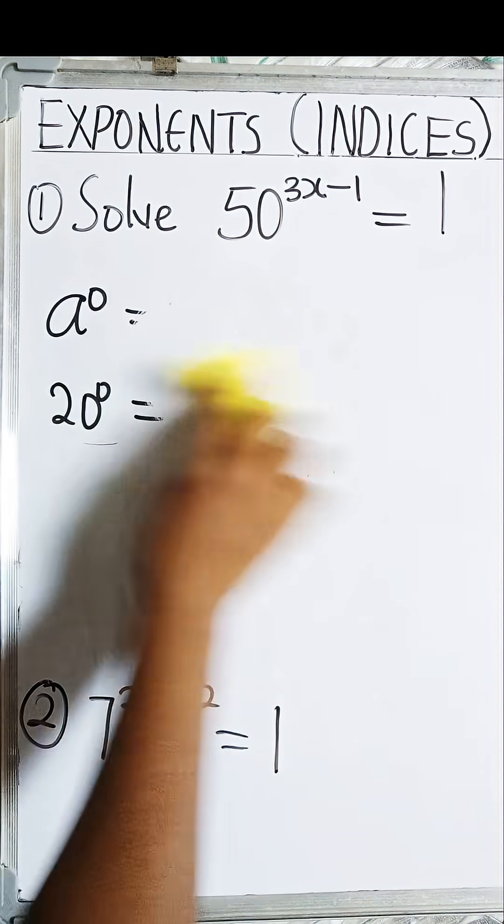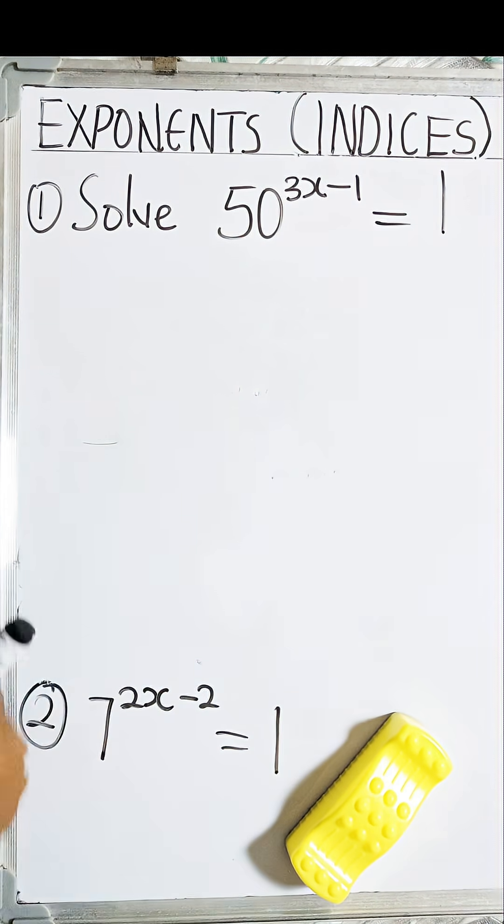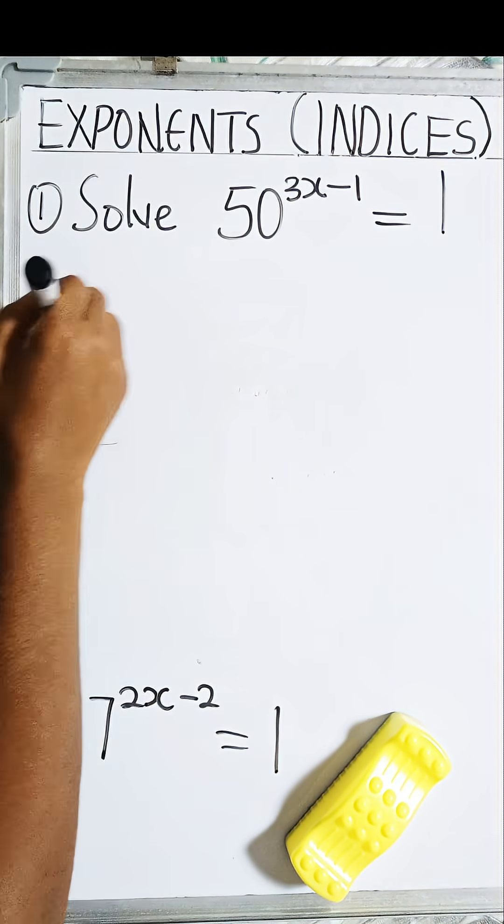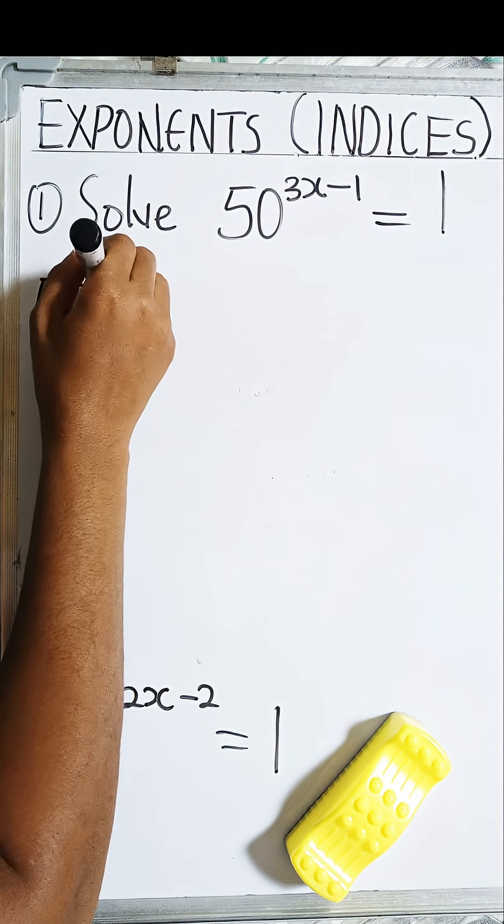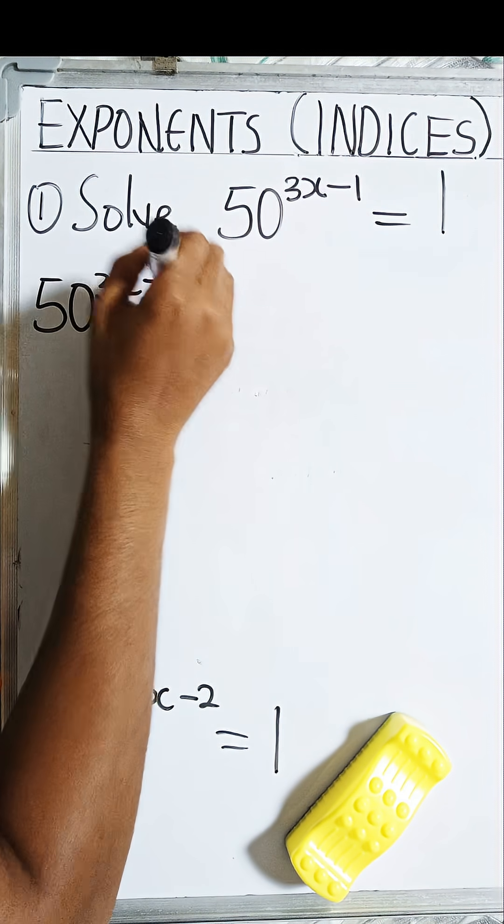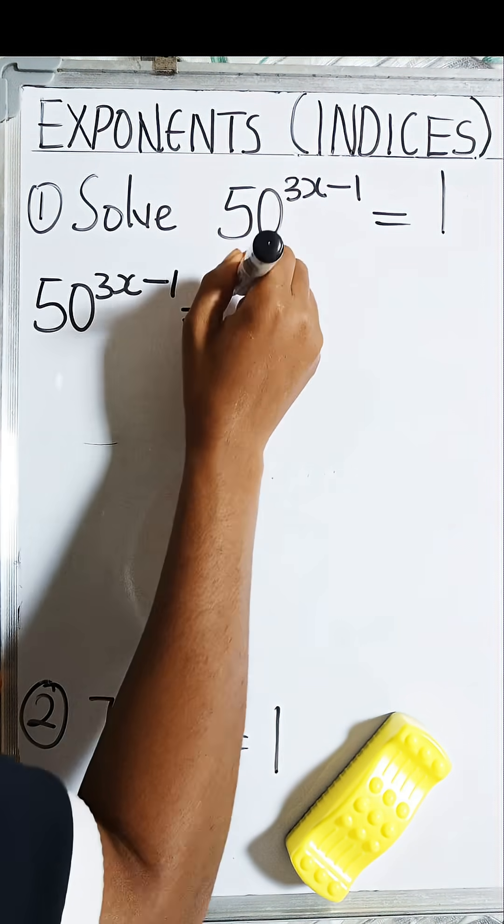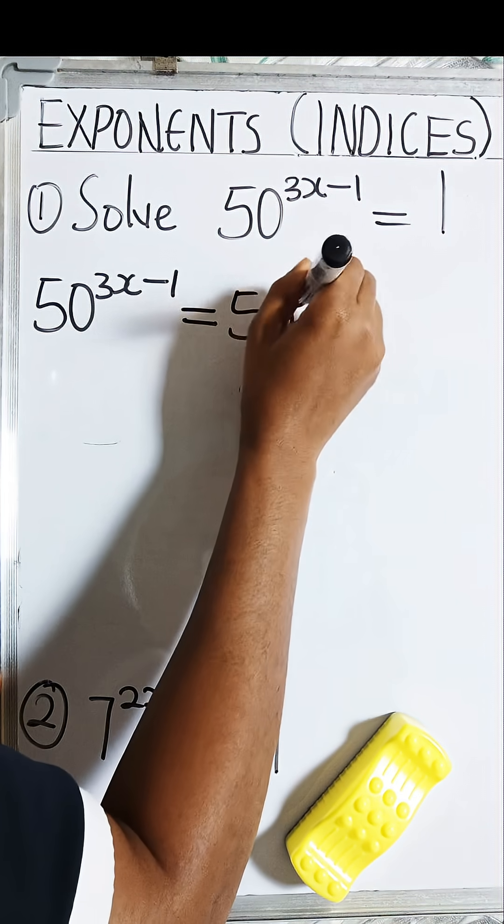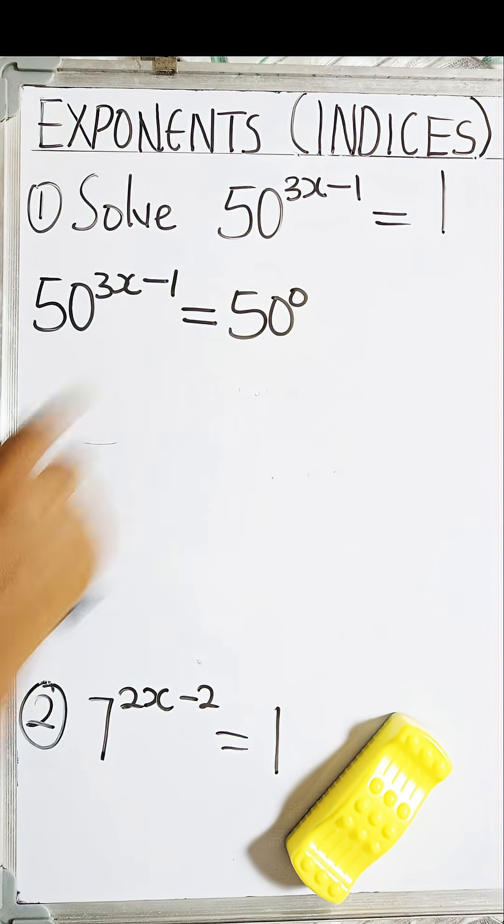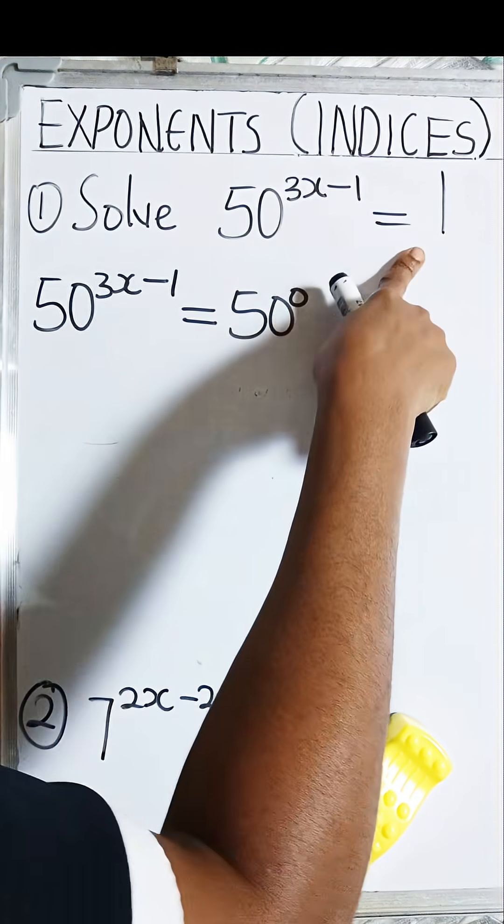Okay, so now let's solve. So now we have 50^(3x-1) is equal to 50^0. This 50^0 is the same thing as 1.